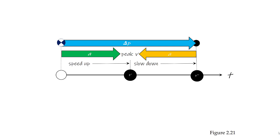As the position moves from left to right, first we have to speed up. Whenever we're speeding up, the acceleration is going to be in the direction of travel, so our acceleration is also going to be going from left to right. We reach our peak velocity somewhere in the middle, and then we start to slow down. Whenever an acceleration is going to slow us down, that acceleration has to be opposite of the direction of travel — in this case, going from right to left.